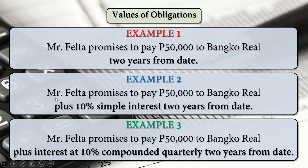Our second example: Mr. Felta promises to pay 50,000 pesos to Banco Real plus 10% simple interest two years from date. Our third example uses 10% compounded quarterly two years from date. So the first example has no interest, the second uses simple interest, and the third uses compound interest at 10% compounded quarterly — all for two years.